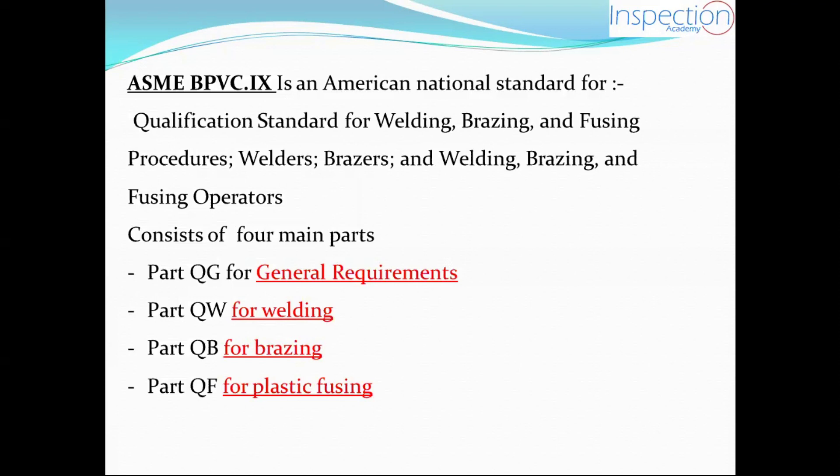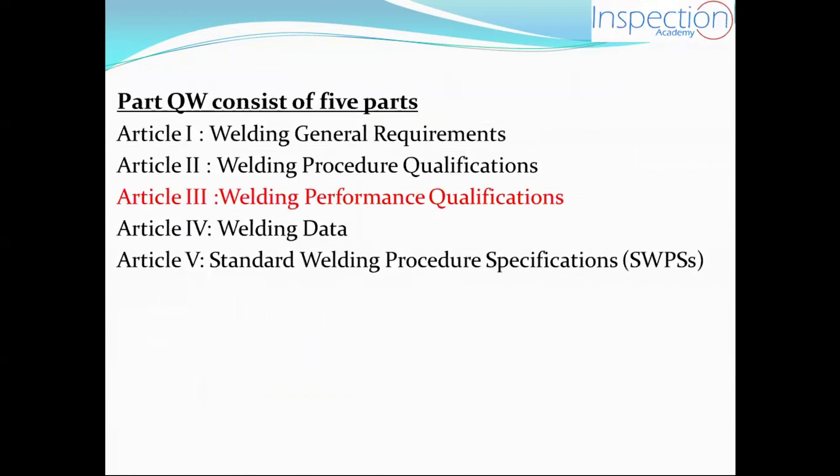It consists of four main parts: Part QG for general requirements, Part QW for welding, Part QB for brazing, and Part QF for plastic fusing. Of course, we're going to focus on Part QW, which is for welding. This part consists of five articles. Article 1 is for welding general requirements, and Article 2 is for welding procedure qualifications.